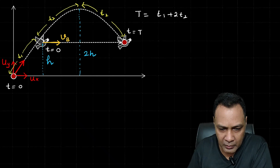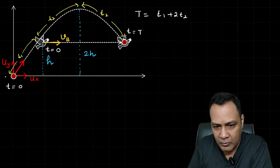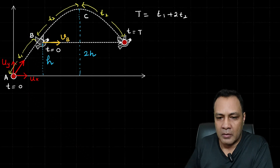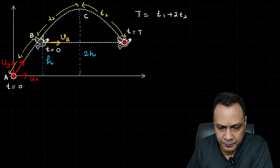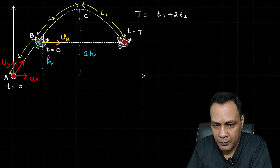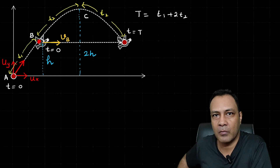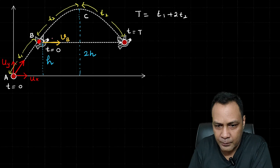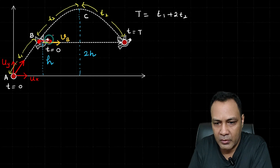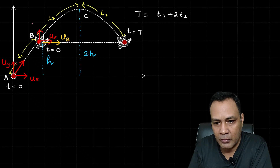Label the point of projection as A, the bird's original position as B, and the maximum height point as C. When the stone reaches point B, the bird has already flown away. At point B, the horizontal component of the stone's velocity is still ux, but the vertical component has changed to vy.